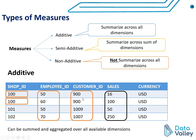We can do the same aggregation across the customer dimension — for example, get the maximum sales per customer, extract what the maximum purchase was for customer ID 900, or find the customer who generated the maximum revenue. We can also do the same operation per currency. As we can see, for the sales measure we can get maximum, minimum, sum, average, and median across all available dimensions — shop ID, employee ID, customer ID, and currency. In this case, we call the sales measure an additive measure.